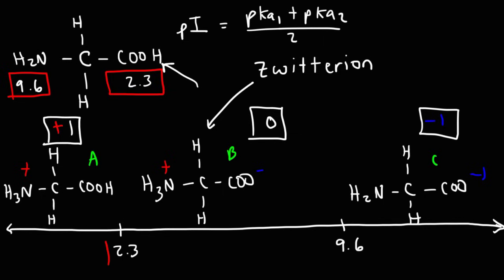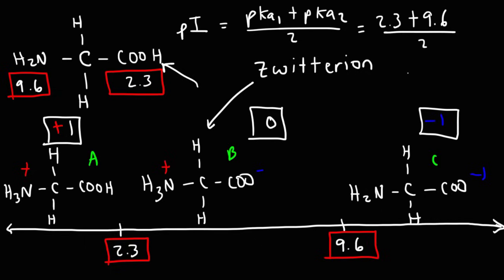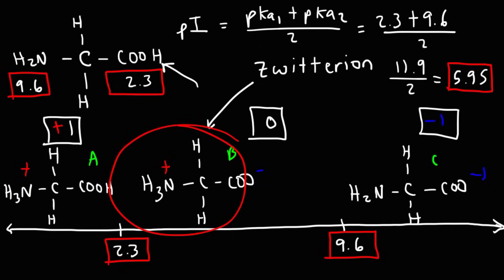To the left of the zwitterion, pKa1 is 2.3, and to the right it's 9.6. So the pI is going to be (2.3 + 9.6) / 2. That's 11.9 divided by 2, which is about 5.95. So 5.95 is the isoelectric point of this amino acid. At a pH of 5.95, the dominant form of the amino acid will be almost completely the zwitterion.